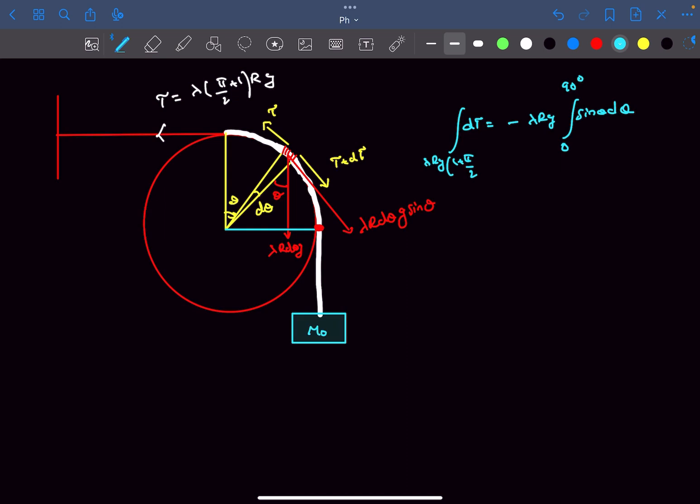The tension at this point will be M₀g plus the weight of this rope. The length of the rope is (πR/2 + R), and this length is πR/2, so this remaining length is R. This gives lambda R g. The tension at that point is M₀g + lambda R g.